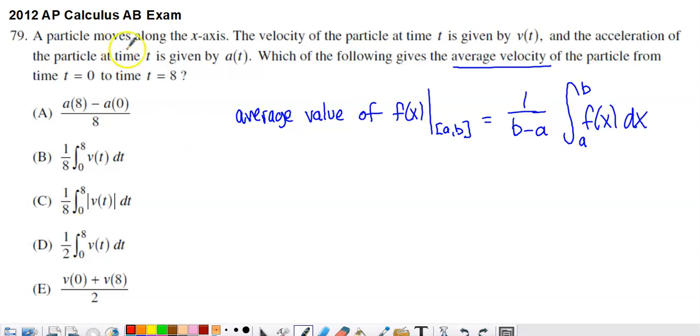So if we read through what we have, particle moves along the x-axis. Seen that a bunch. Velocity of the particle at time t is given by v of t. Acceleration at time t is given by a of t. They don't give us a of t or v of t. They just kind of name them.